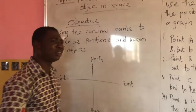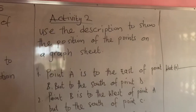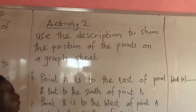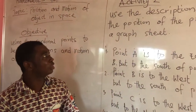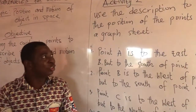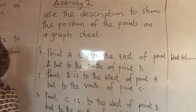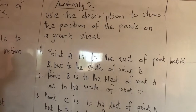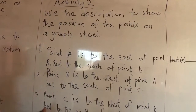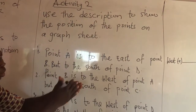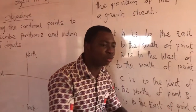And we used it to describe objects. Now, our activity today is to use the description to show the position of the points on a graph sheet. First we used the cardinal point to describe the position of the object; now we are going to use the description to draw the points on the cardinal point or the graph sheet.